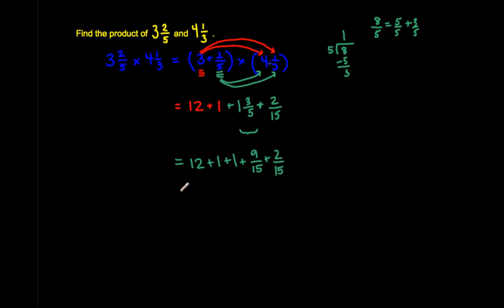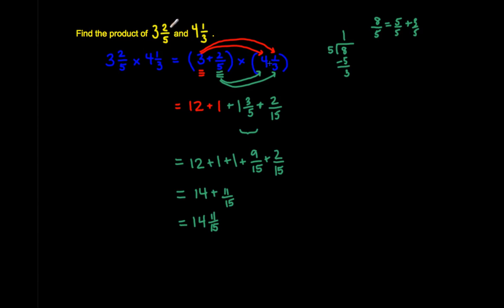When I add up all of my numbers: 12 plus 1 is 13, plus 1 is 14, so I get 14 wholes. Then nine-fifteenths plus two-fifteenths is eleven-fifteenths. So the answer to this problem is 14 and eleven-fifteenths. That is the product of three and two-fifths and four and one-third.